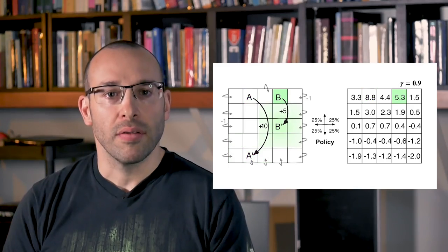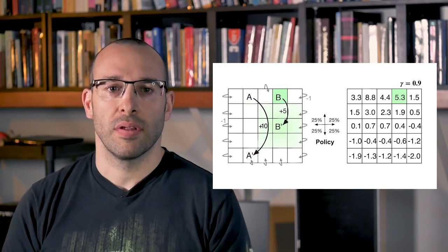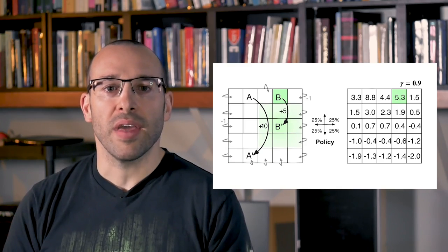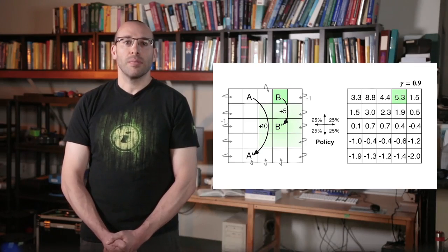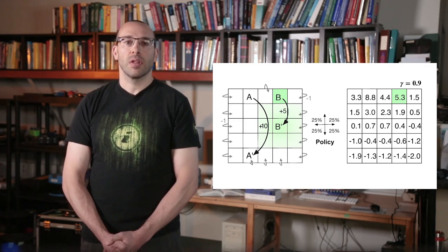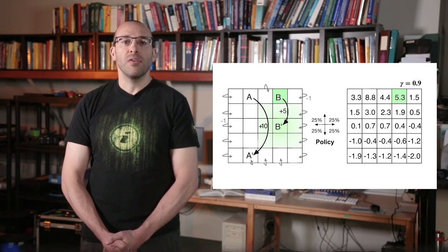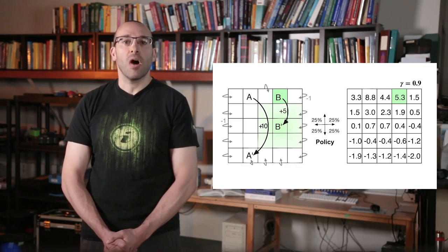On the other hand, the value of state B is slightly greater than five. The transition from B moves the agent to the middle. In the middle, the agent is unlikely to bump and is close to the high-valued states A and B. It's really quite amazing how the value function compactly summarizes all these possibilities.